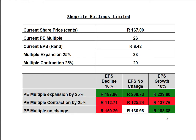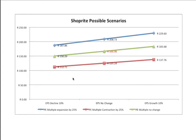With no change in the price-to-earnings multiple, with an EPS growth of 10% you will be making money if you're long in the share. However, if the multiple were to contract by 25% and you were long in the share even with an EPS growth of 10%, you would still not be making money — you would need a lot more earnings growth to actually make money on the stock.